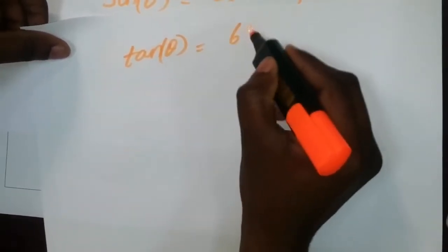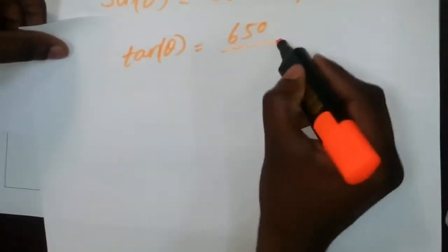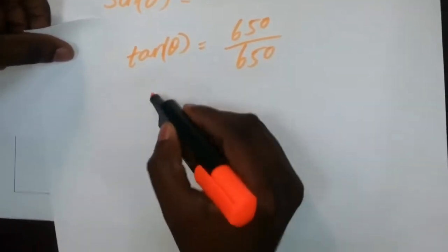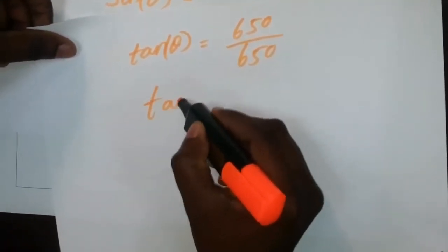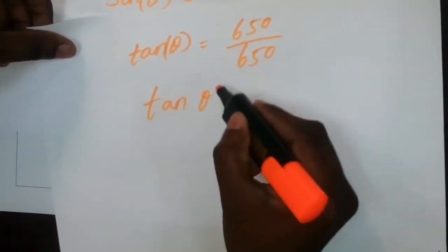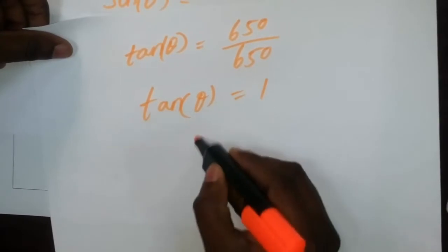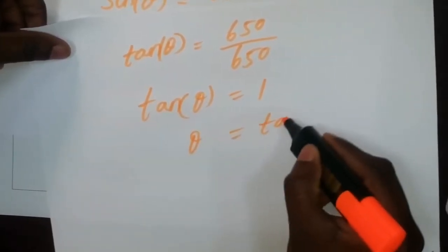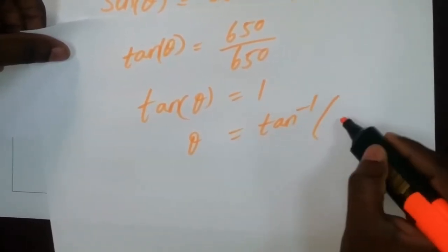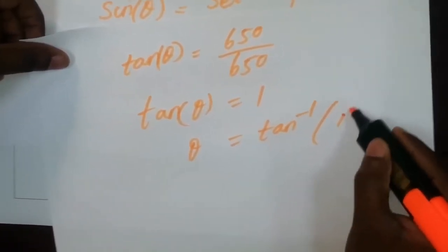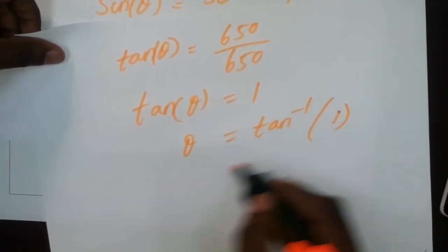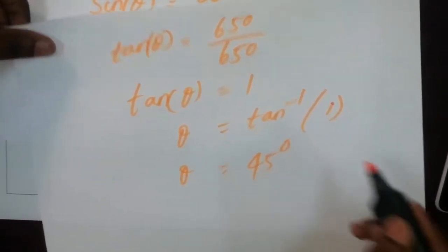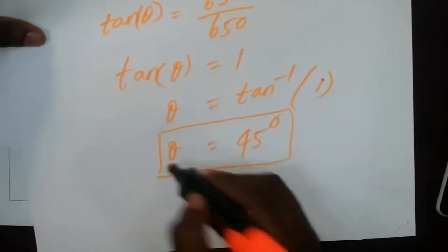Using the tan theta formula: tan theta equals 650 divided by 650, so tan theta equals 1. Therefore theta equals tan inverse of 1, which gives us 45 degrees.